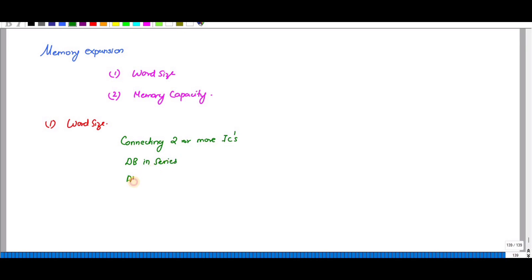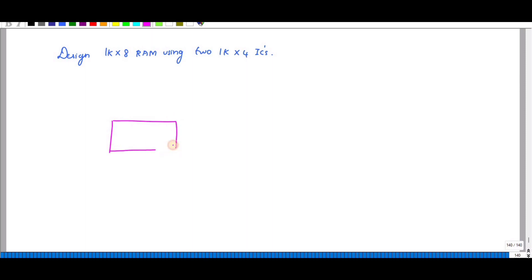The chip select pins are given simultaneously. Let us discuss one problem based on this: Design 1k × 8 RAM using 2 1k × 4 ICs. First let me draw this 1k × 4. They have given 2 1k × 4 ICs.